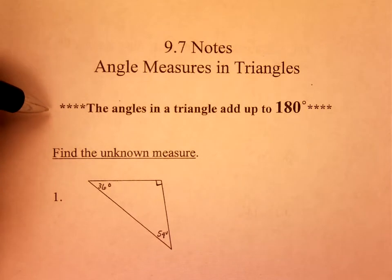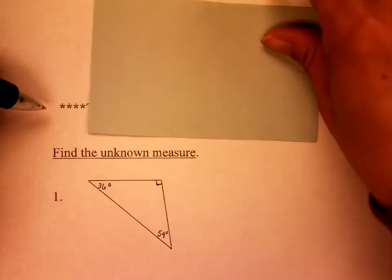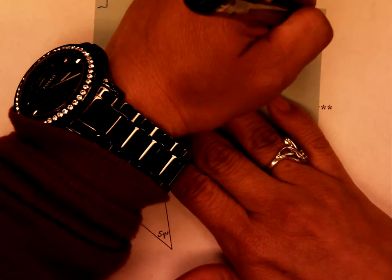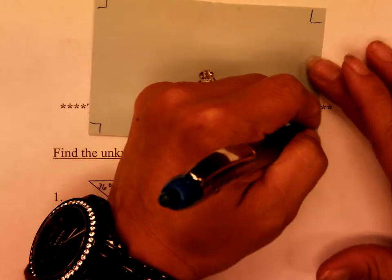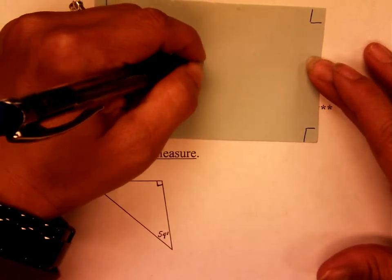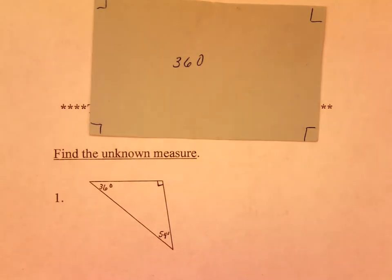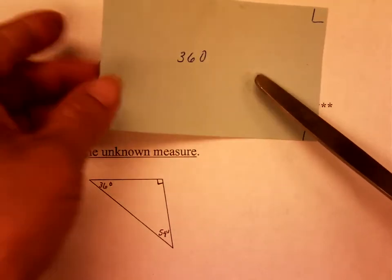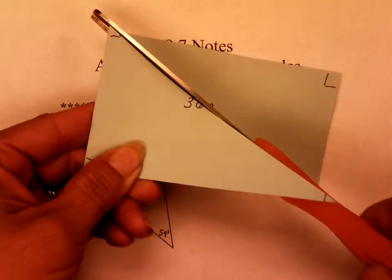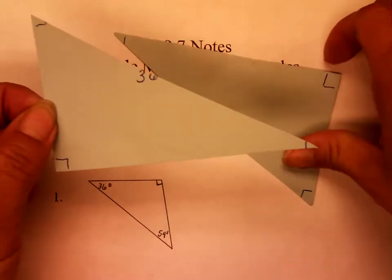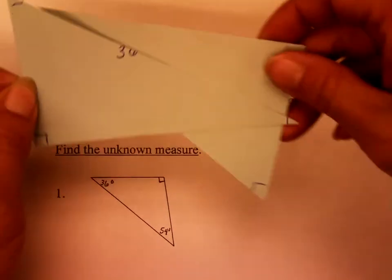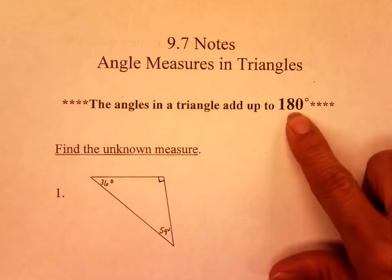The angles in a triangle add up to 180 degrees. Remember on Friday, we had taken notes where we said a rectangle has four right angles, and if you add these up, it equals 360 degrees. Now, if you take a rectangle and cut it in half, you have two triangles, so one triangle is equal to 180 degrees because it's half of 360 degrees. That's how we get that a triangle equals 180 degrees.